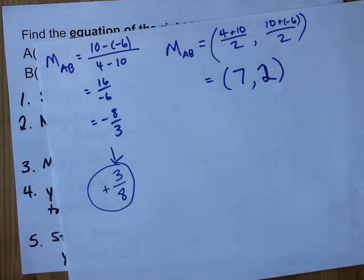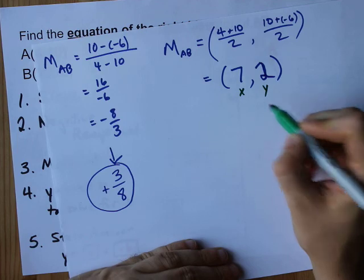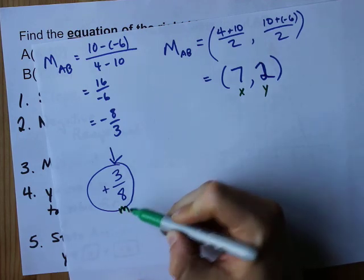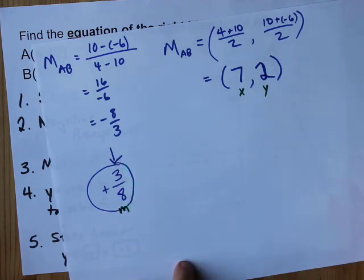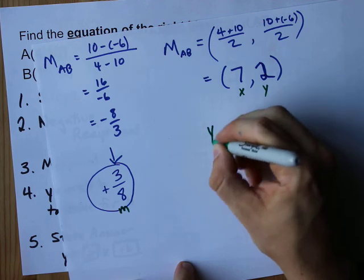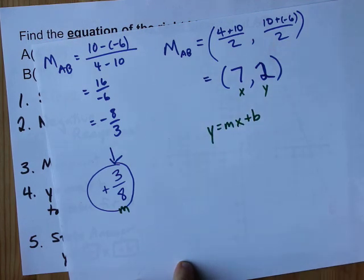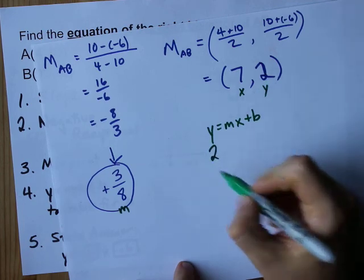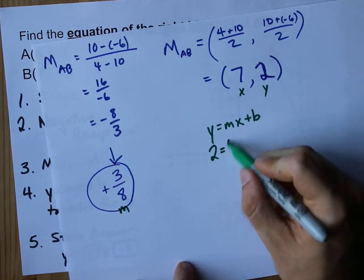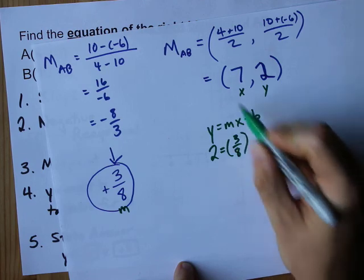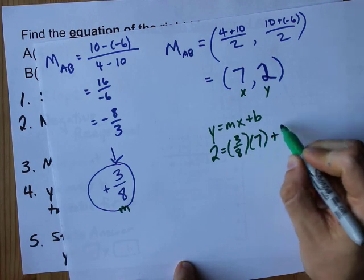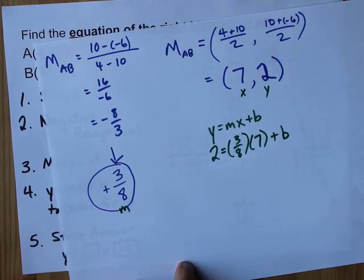Now, with that x and y from the midpoint and the new slope that you found via negative reciprocal, we want you to use y equals mx plus b to solve for little b. y is 2, the slope is 3 eighths, and the x is 7. Your job is to solve for b here.